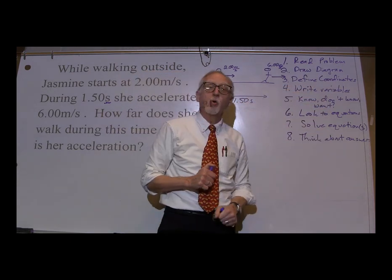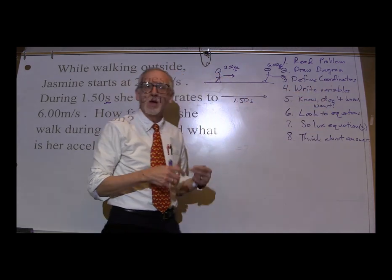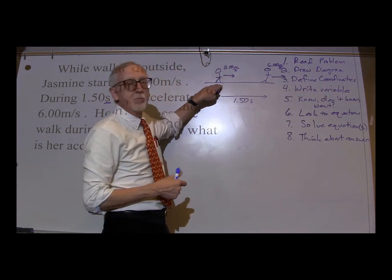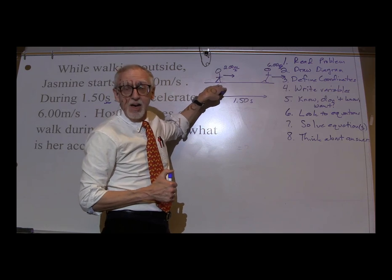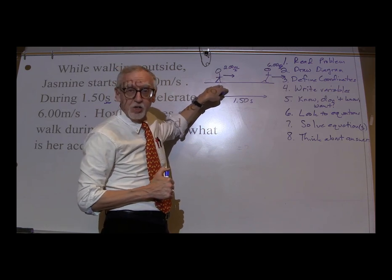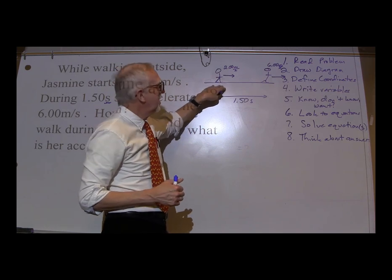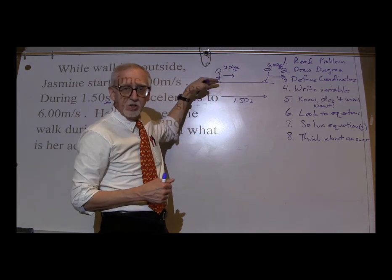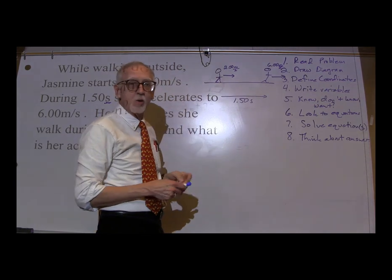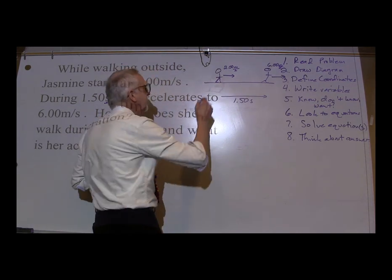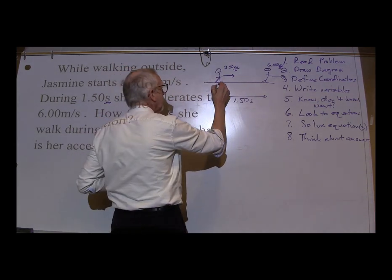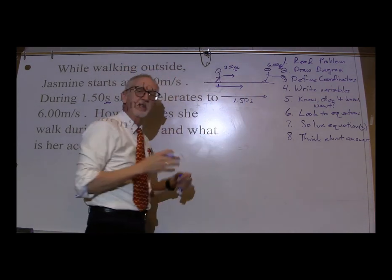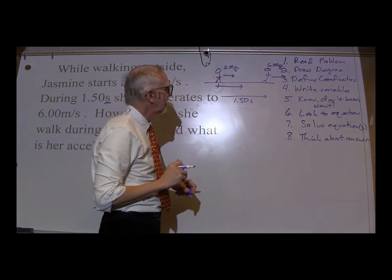Define our coordinate system. Where do we want to put our origin? Why not just put the origin at her initial position? I've drawn her walking to the right, so we'll define our coordinate system pointing to the right. Here's our origin and there's our coordinate system. Easy enough.